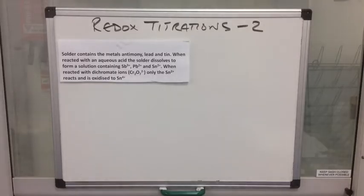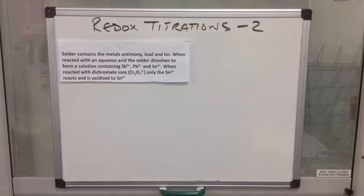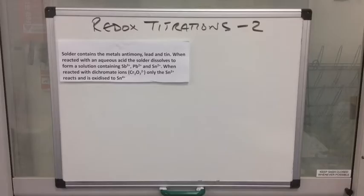The first one is about solder. We're told that it contains three metals: antimony, lead, and tin. When reacted with aqueous acid, the solder dissolves and the metals form those three ions — Sb3+, Pb2+, and Sn2+. The solution is then reacted with dichromate ions, and importantly only the Sn2+ ions will react, getting oxidised to Sn4+.